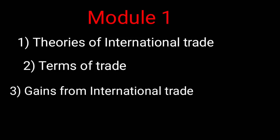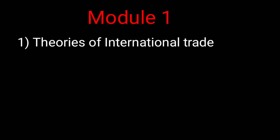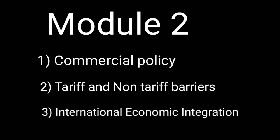Module 2 is again divided into three parts: commercial policy, tariff and non-tariff barriers, and international economic integration. A question can come on free trade policy and its pros. Different types of tariff and non-tariff barriers are important to study. Also read about different types of economic integration — such as ASEAN, the European Union, and Brexit. If this doesn't appear as a main question, it will definitely come as a short note.